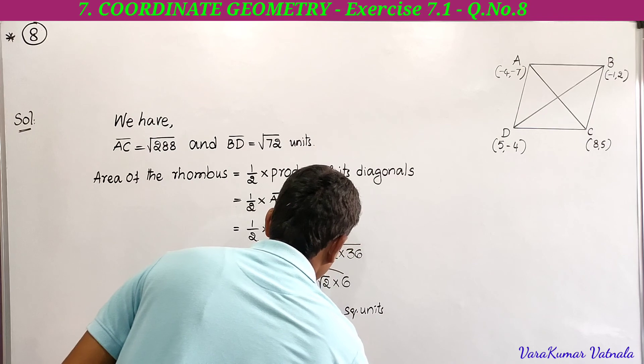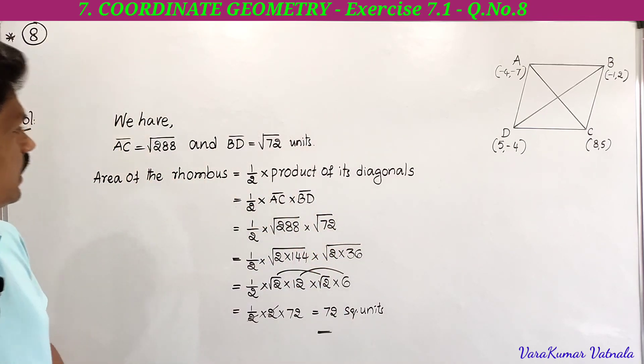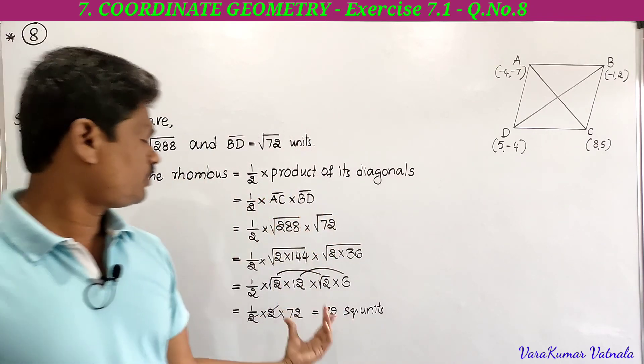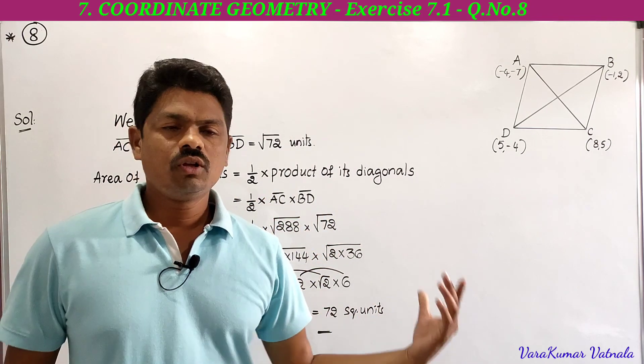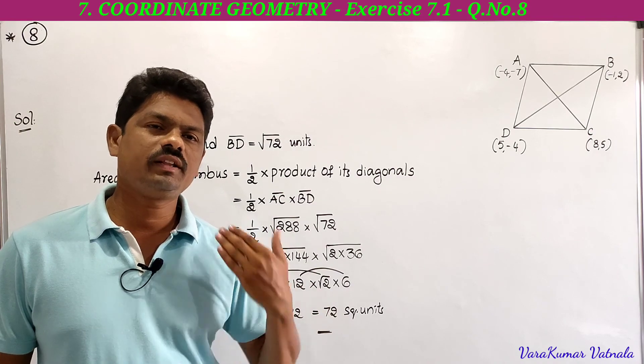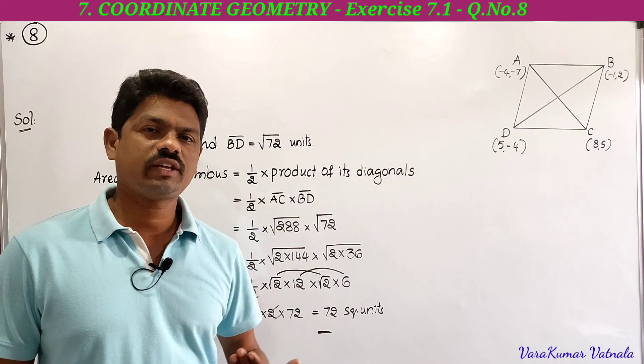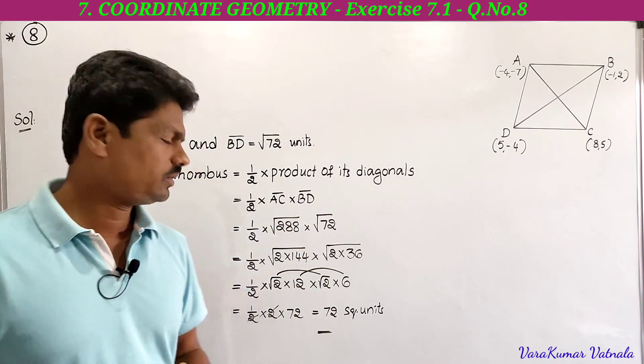So the area of the given rhombus is 72 square units. That's all for today's class. We will meet in the next class with another problem. Thanks for watching.